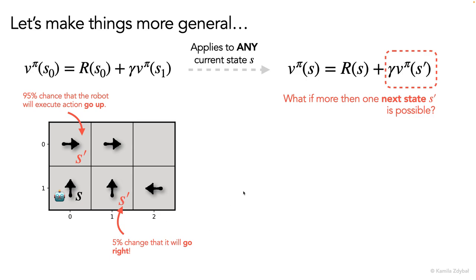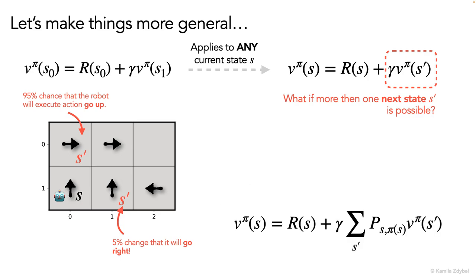So now we just want to account for this in the value function equation. We can do that by simply allowing more than one possible future state using this summation. So here P is what we call the transition probability — in this example, this would be a 0.95 probability of entering one state as s prime and a 0.05 probability of entering the other as s prime.